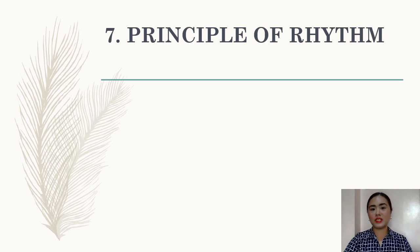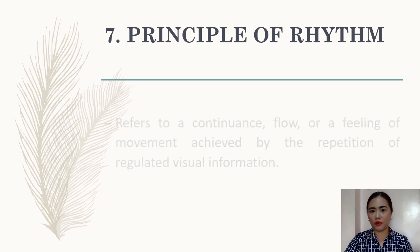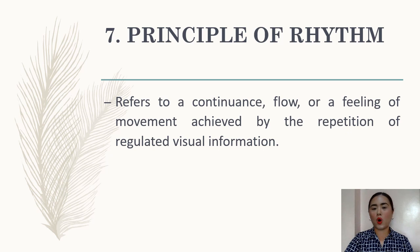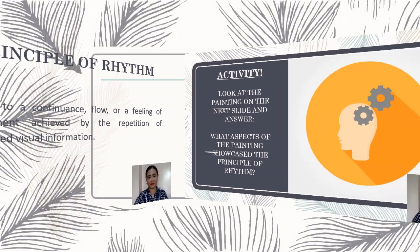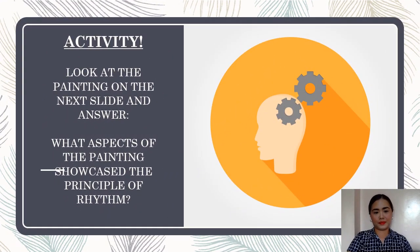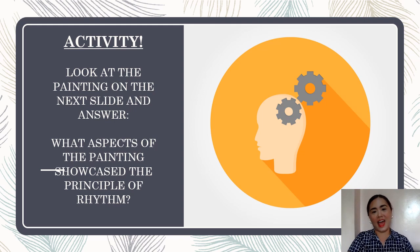The last principle is the principle of rhythm. Rhythm refers to a continuance, flow, or feeling of movement achieved by the repetition of regulated visual information. Please look at the painting on the next slide and answer: What aspects of the painting showcase the principle of rhythm?